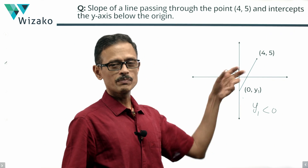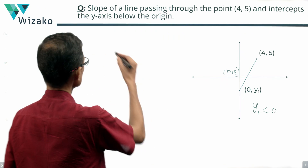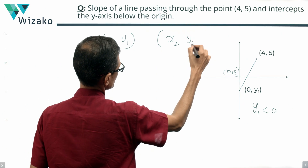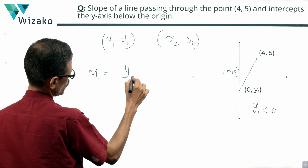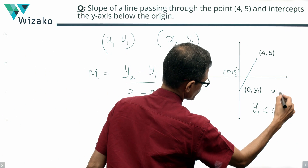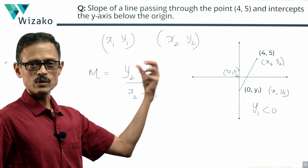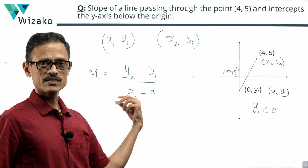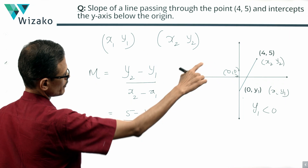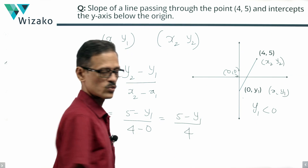Let's say the two points through which the line passes are (4, 5) and (0, y1). To find the slope of a line given coordinates of two points (x1, y1) and (x2, y2), we use the formula: slope = (y2 - y1) / (x2 - x1). Plugging in our values, the slope equals (5 - y1) divided by (4 - 0), which simplifies to (5 - y1) / 4.